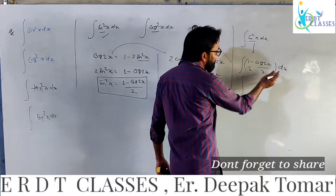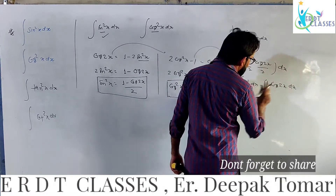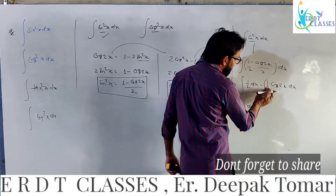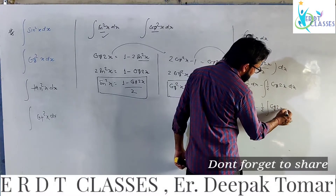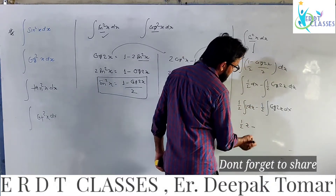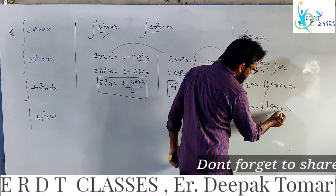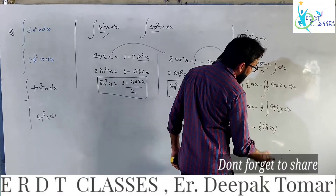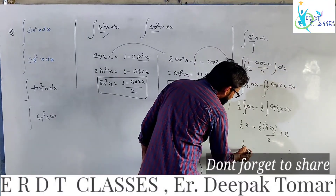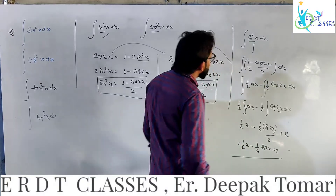Now we will simplify this. We get (1/2) dx minus (1/2) cos 2x dx. The integral of 1 is x, and for cos 2x, since the coefficient of x is 2, we divide by 2. So the result is (1/2)x minus (1/4) sin 2x plus c. This is the integration of sin square x.